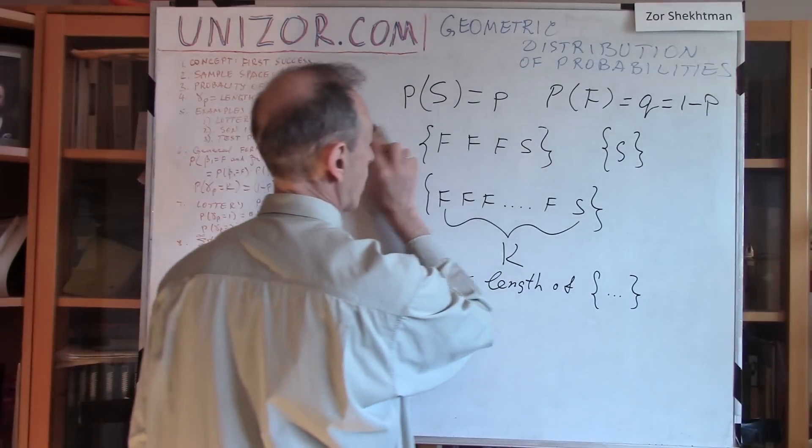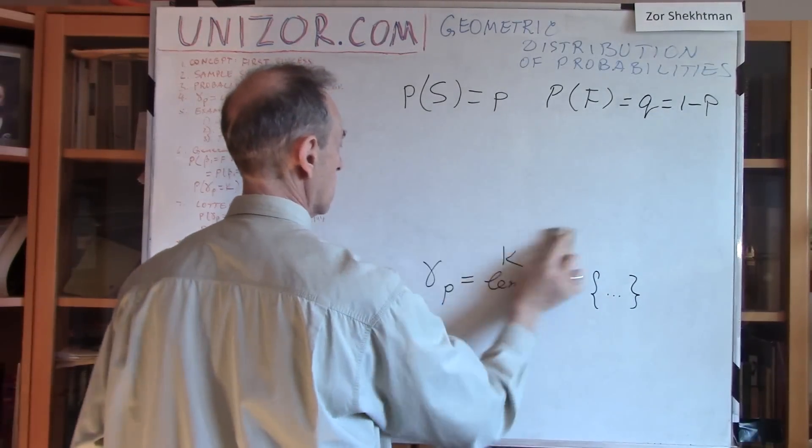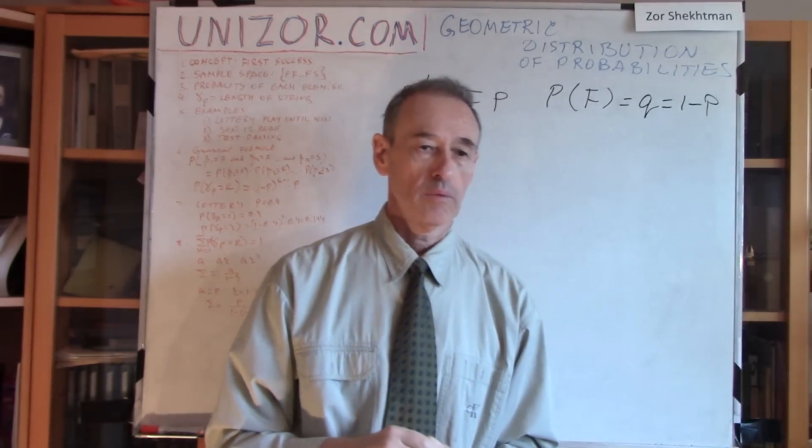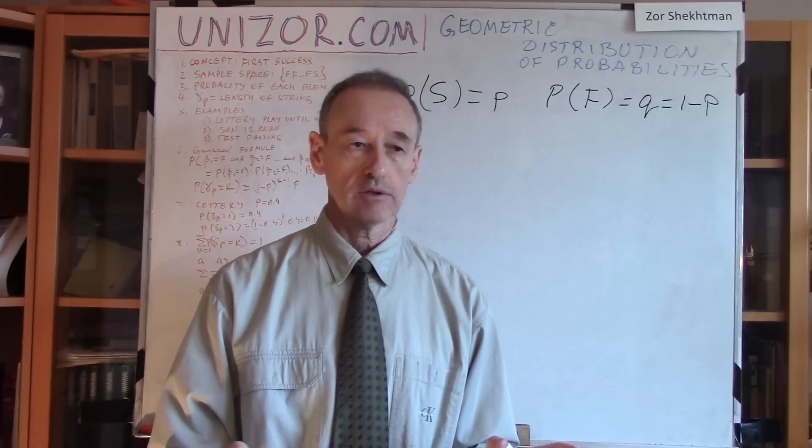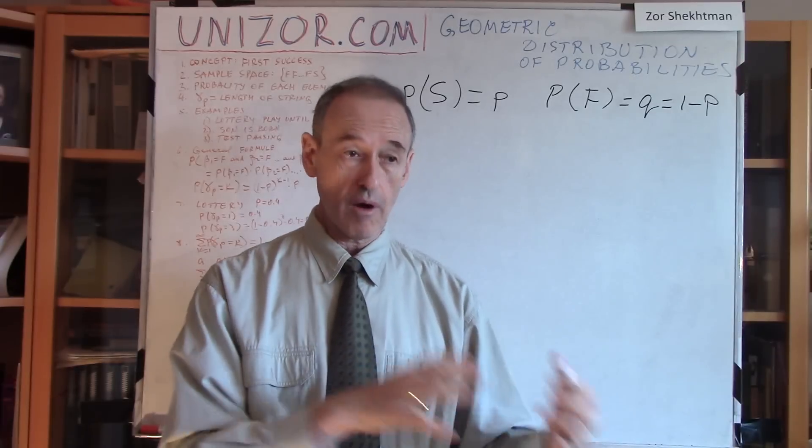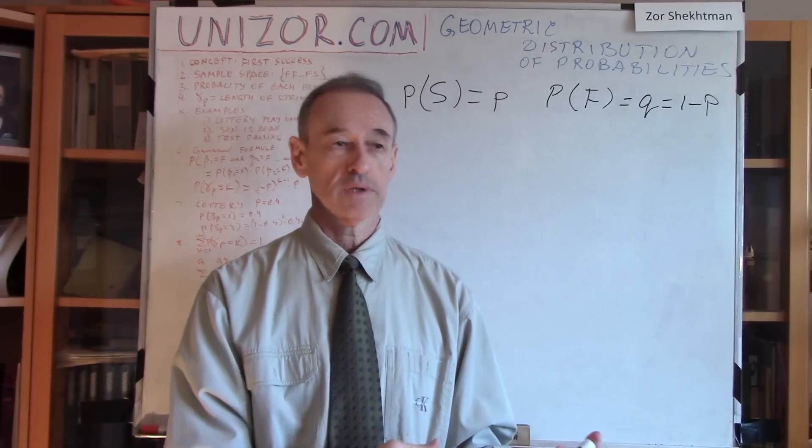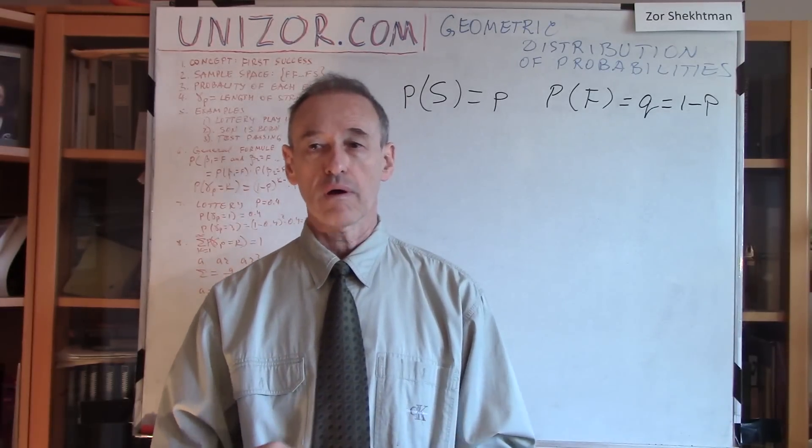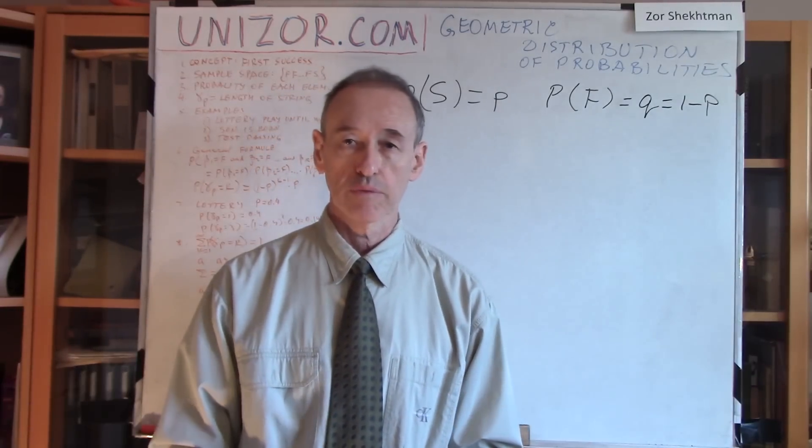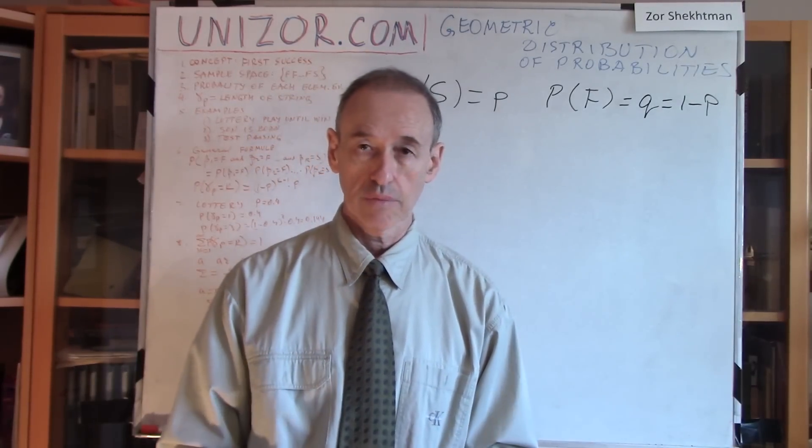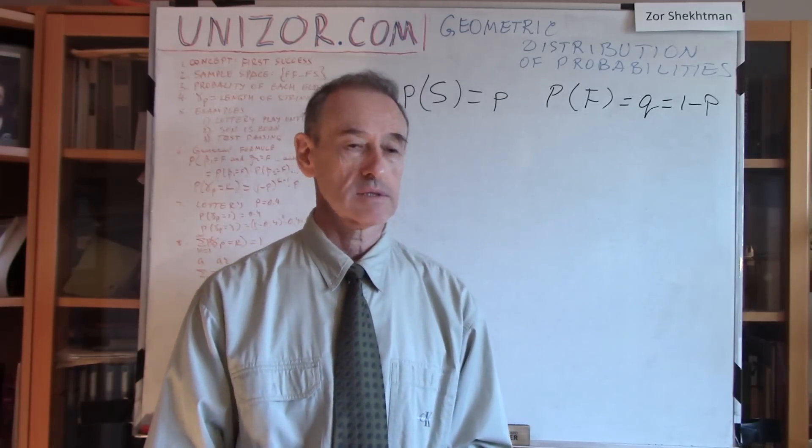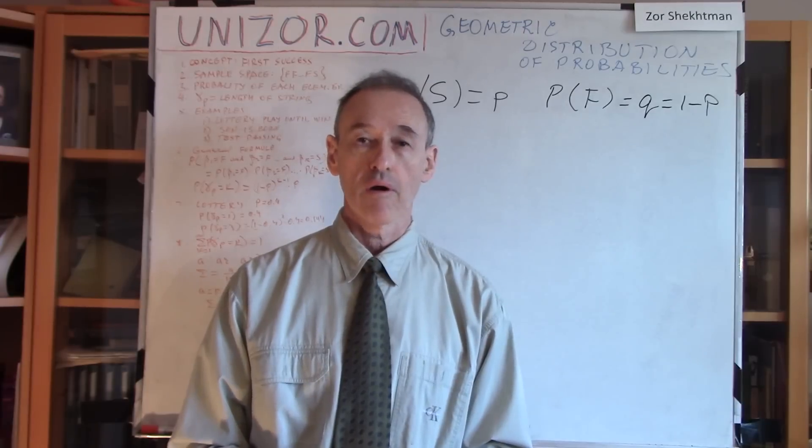Well, the first obvious example is a lottery. Everybody knows that on average people lose in lottery. I mean, there are certain individuals who win, but most of the people are losing, and that's the purpose of why our government actually arranges this lottery. It just earns money, basically. So that's something which statistically earns money.